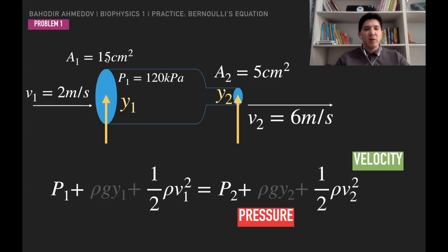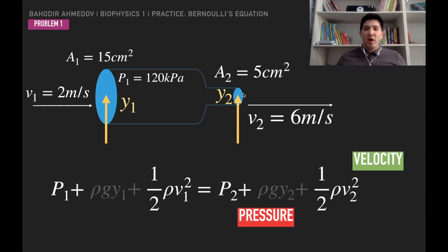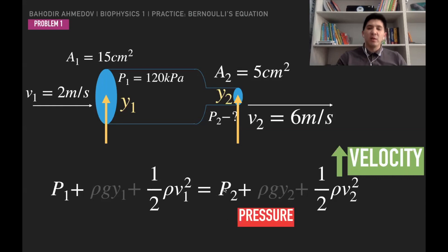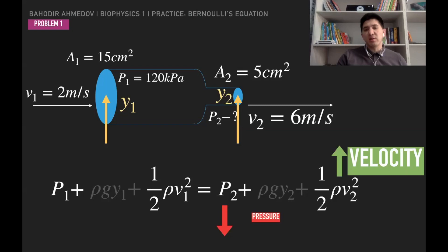This gives us a useful tip: if the cross-section area decreases by a factor of three — from 15 to 5 — the velocity increases by a factor of three, from 2 to 6 m/s. Now we need to find the pressure at the second point. Since velocity increased, and the total energy is conserved, the pressure must decrease.